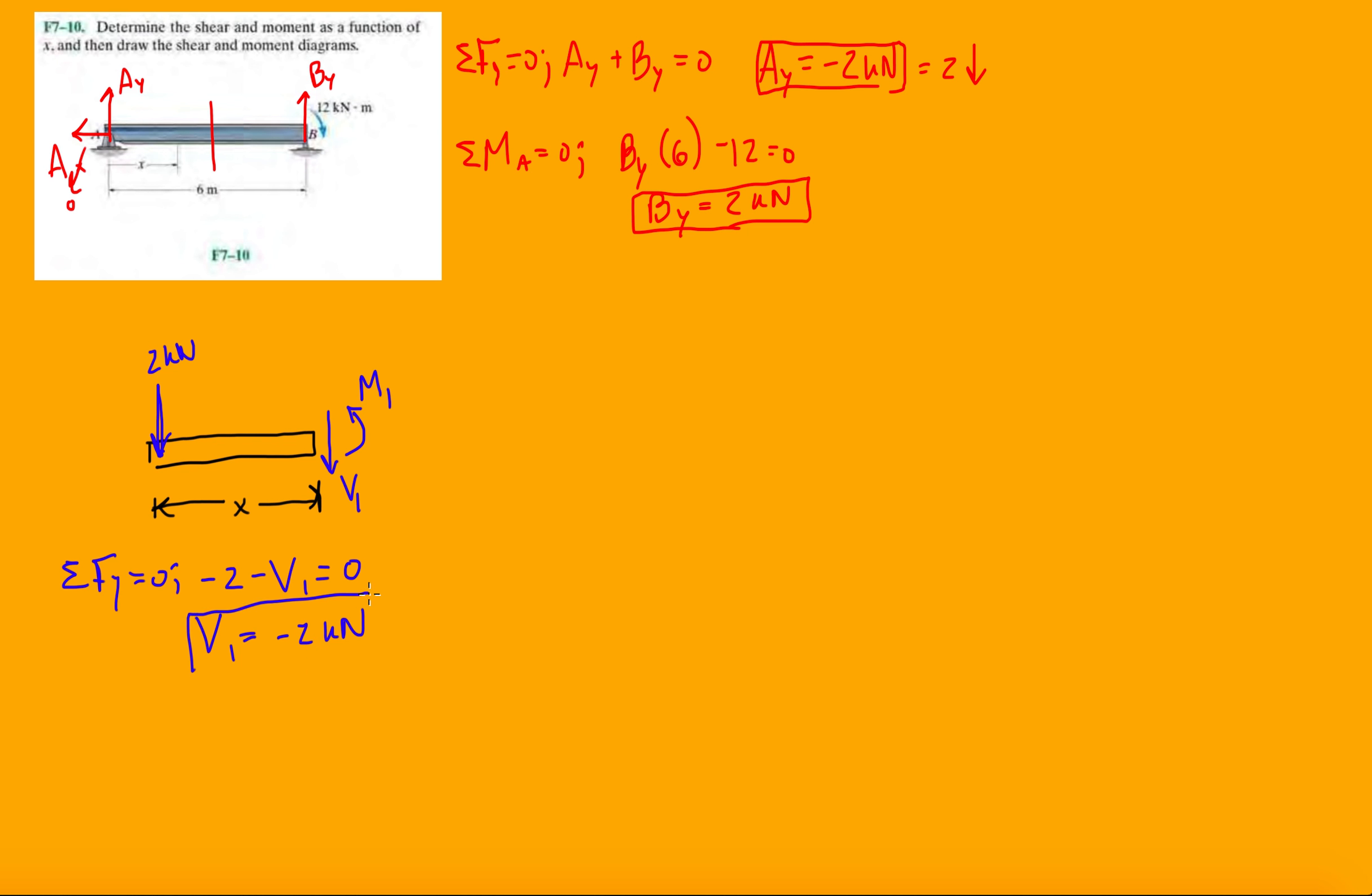Perfect. Okay. And then, we're just going to take a moment about that first cut over here. Alright, and we're going to have 2 times X going counterclockwise. So, 2X plus M1, and then it tells us M1 is minus 2X. Alright, and that's it. So, we only have to make one cut.